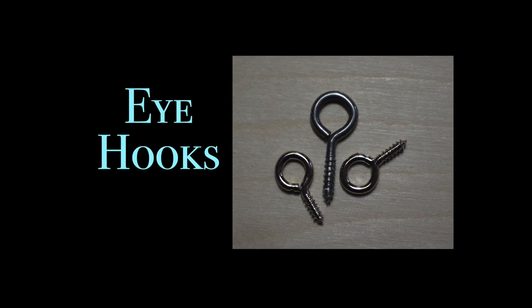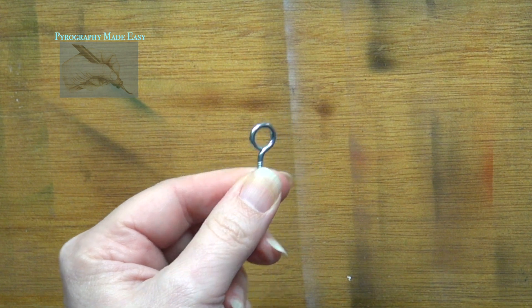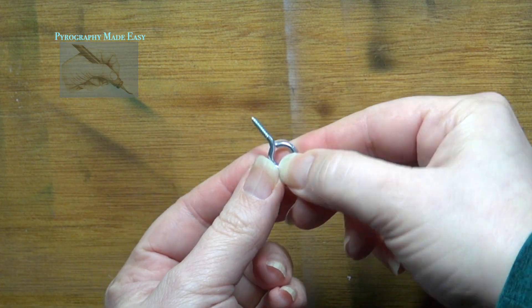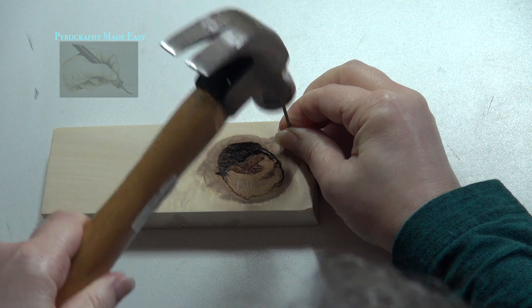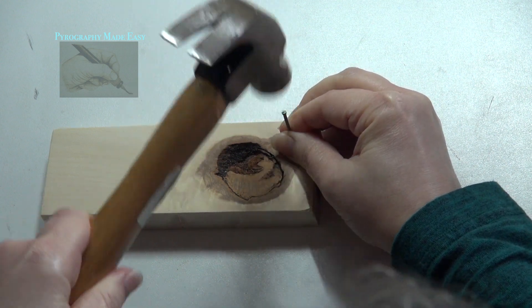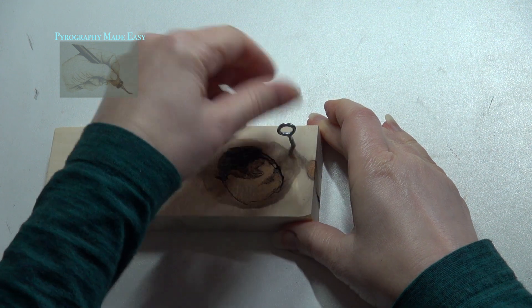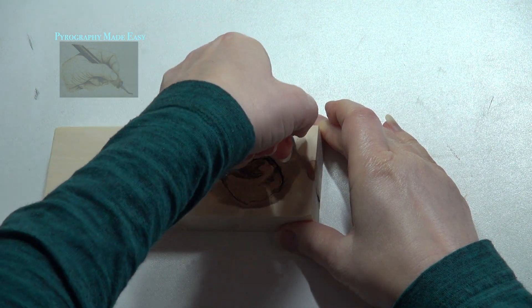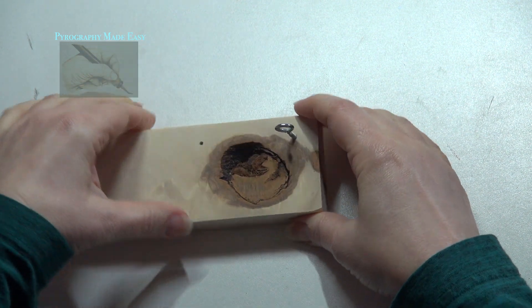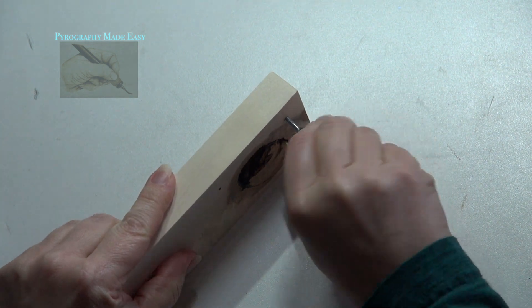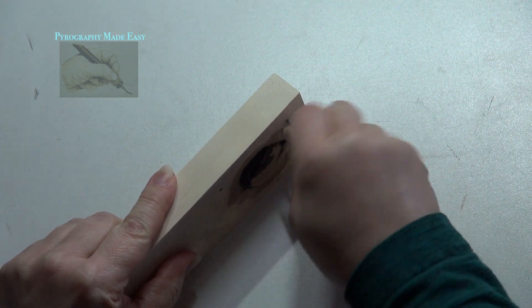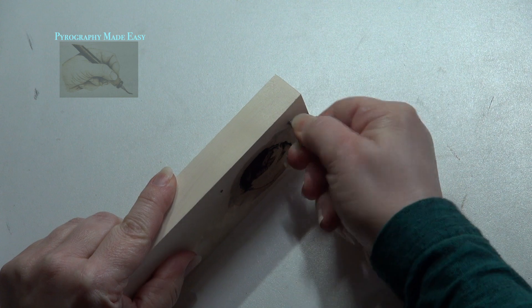Eye hooks are metal circles with a threaded leg that comes to a point. When installing, I first create a pilot hole with a nail. This guides the eye hook into the wood and it makes it much easier to get the eye hook started. To secure, simply turn the eye hook until the threaded leg is completely embedded in the wood.